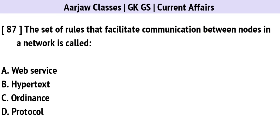The set of rules that facilitate communication between nodes in a network is called? The correct option is D: Protocol.